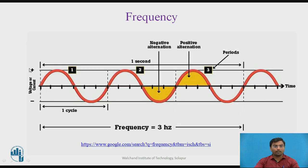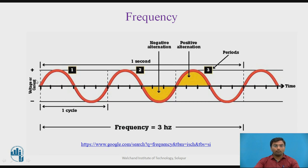Looking at the frequency diagram, we can see the waves. The amount of time required to complete one cycle is the time period T. We usually consider the equilibrium position as 0 degrees, then 90 degrees, 180 degrees, 270 degrees, and 360 degrees. One wave is completed at 360 degrees, so the time required to complete one wave is the time period T.